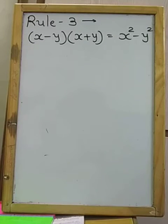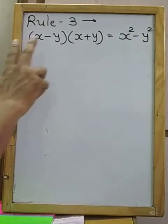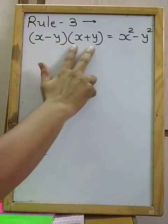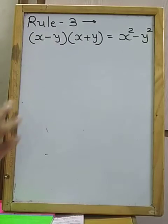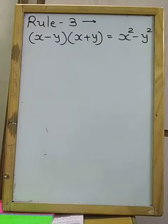Namaskar students. Now rule number three. Here you have given two terms — means binomial — in two different brackets with multiplication between both brackets.